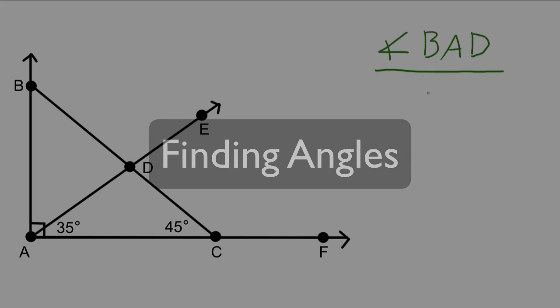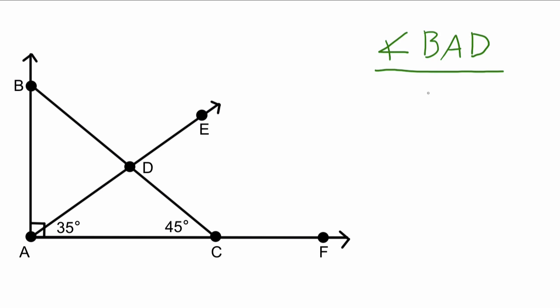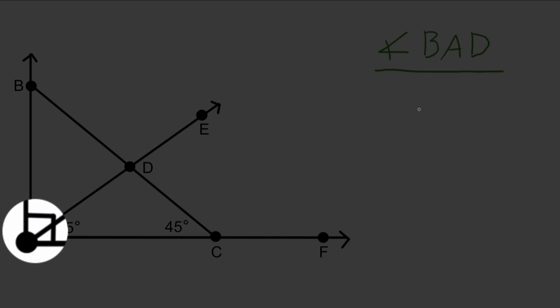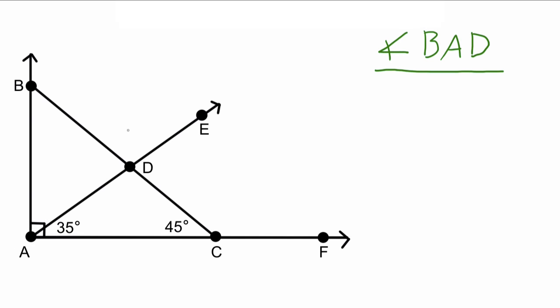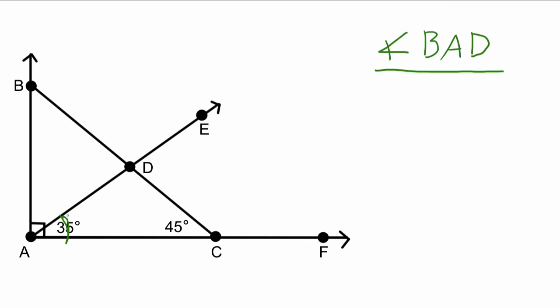Today we're going to be talking about angles and we're going to be using this diagram to do so. The first angle we're looking for is angle BAD, right there. That little box means it's a 90 degree angle for BAC, and this segment A to D is splitting that 90 degree angle where one part of it is 35 degrees, and what we need to do is find what the other part is.